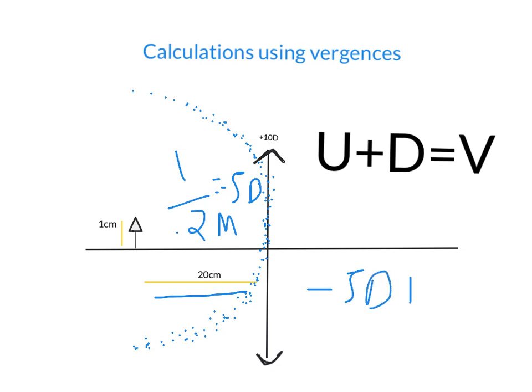The D is just the power of the lens, which is positive 10 diopters.